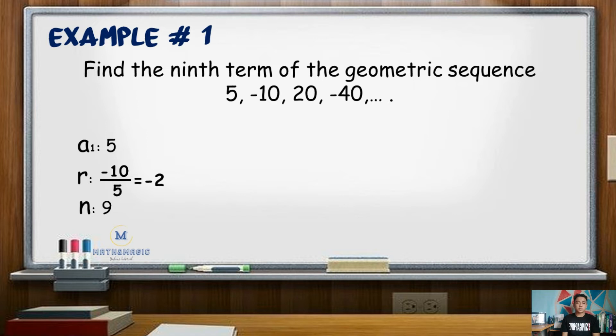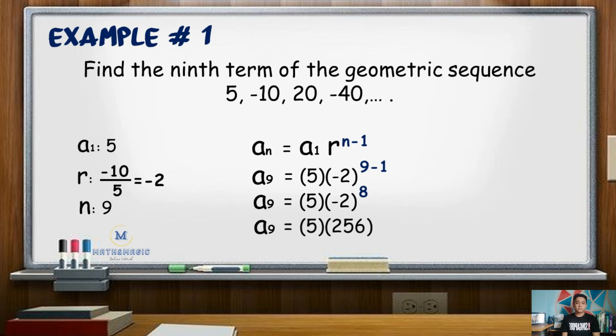Substituting these values in our formula a sub n equals a sub 1 times r raised to n minus 1, a sub 9 equals 5 times negative 2 raised to 9 minus 1. 9 minus 1 is 8, so that's negative 2 raised to 8. Negative 2 raised to 8 is 256 multiplied by 5. The product is 1,280. Hence, the 9th term of the given sequence is 1,280.